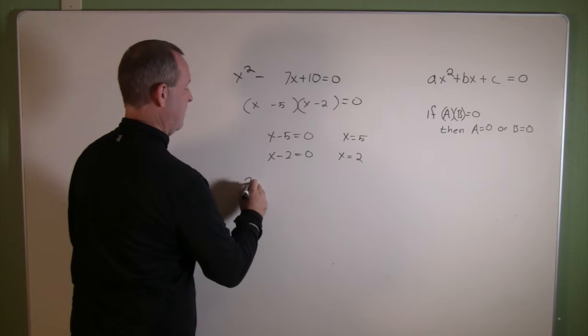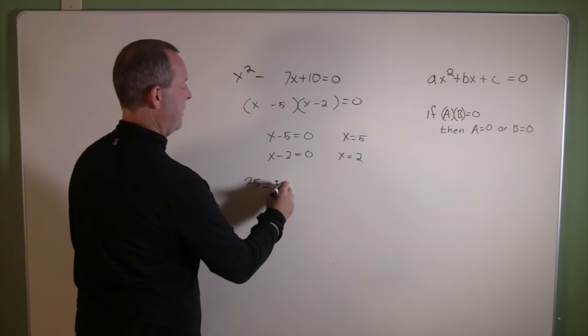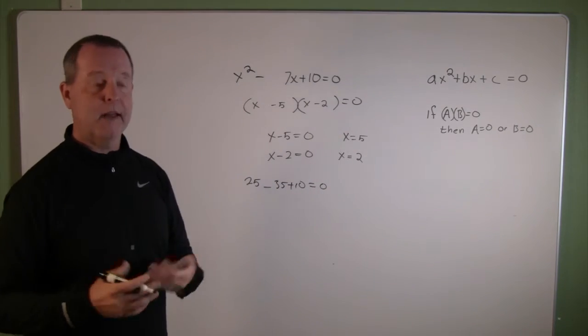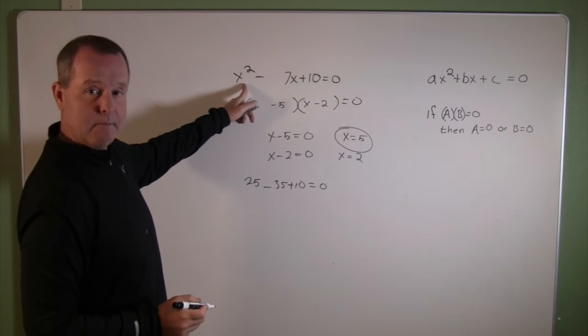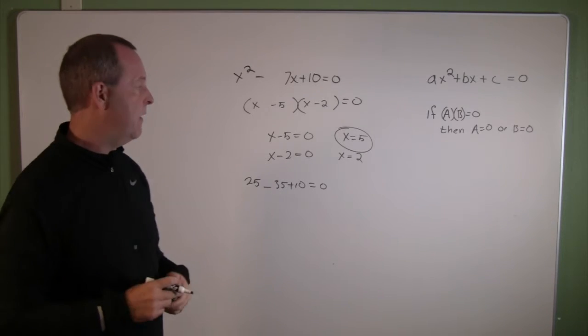That would be 25 minus 7 times 5, which is a 35 plus a 10 equals zero. That's true. I know that for x to equal 5 makes this a true statement. So one of my solutions is x equals 5.